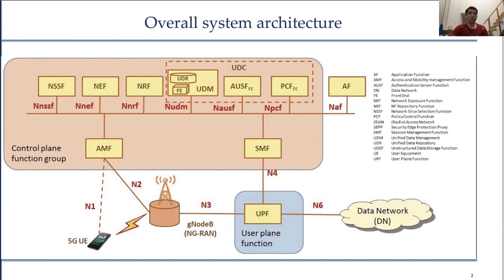However, it is also possible to connect the NR radio access network to the legacy LTE core network. The LTE core network was known as EPC, or Evolved Packet Core. In fact, this is the case when operating NR in certain configurations.